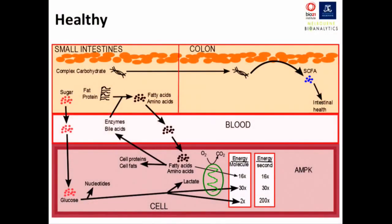I'm going to try to make this as simple as possible. In a healthy individual, you would eat food containing complex carbohydrates, sugars, fat, and protein. That sugar would be absorbed from the small intestines into the blood. The complex carbohydrates would make their way into the colon to be digested into short-chain fatty acids, which are important for intestinal health. Fat and protein would be digested to fatty acids and amino acids in the small intestines and absorbed into the cell. Those fatty acids and amino acids are important for creating cellular proteins and cell fats, as well as enzymes and bile acids, which feed back into the small intestines to digest other fats and proteins — a nice little cycle.